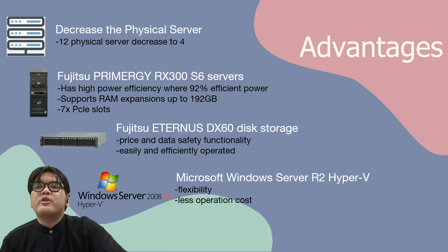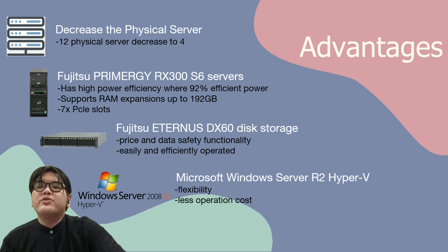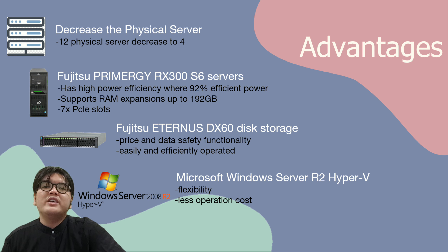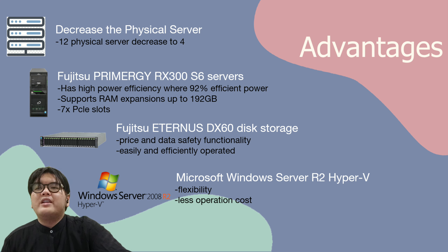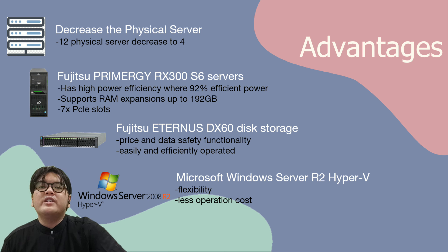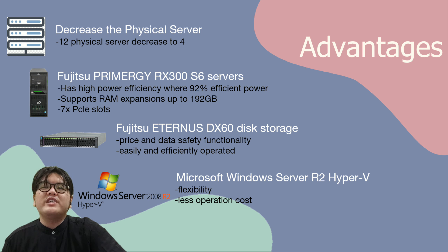In addition, I will talk about the advantages of using the Fujitsu Eternus DX60 disk storage. One of the reasons it was chosen is because of its price and rich data safety functionality. Besides that, it is also easily and efficiently operated, and there is no extra cost charged for its software package. Lastly, I will talk about the advantages of using Microsoft Windows Server R2 Hyper-V. It is chosen because of its flexibility, which allows moving virtual machines between physical hosts. Operational costs can also be decreased due to fewer physical servers being needed.